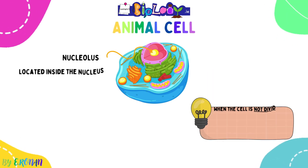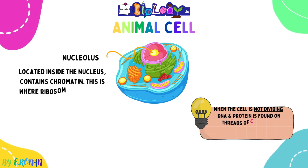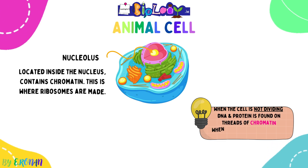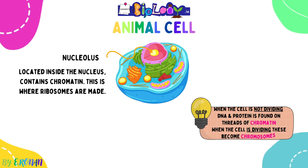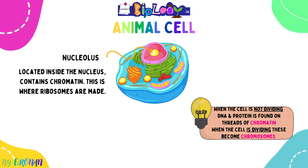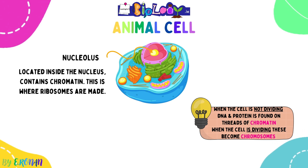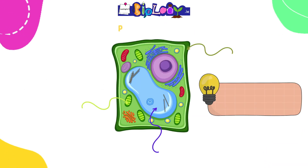The next structure is the dark region at the centre of the nucleus known as the nucleolus, which is only found in eukaryotes. It contains chromatin, and this is where ribosomes are made. Remember: chromatin is only present in a cell when the cell is not dividing. When the cell is dividing, chromatin becomes structures known as chromosomes. We find our genes, DNA, and protein on the chromosomes.